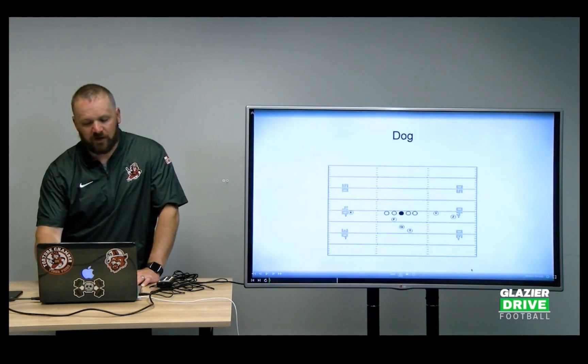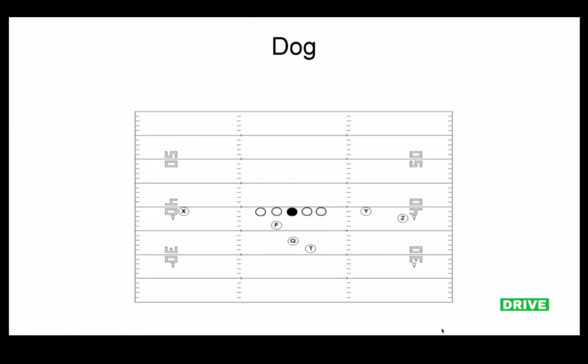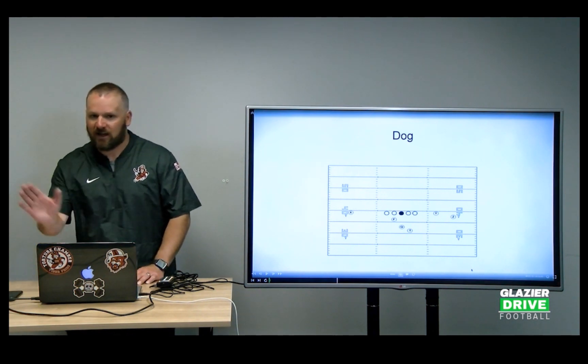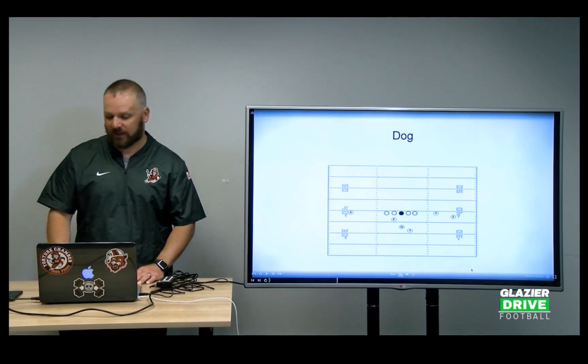Then we have Dog. Dog is a traditional three-receiver set with a fullback. This fullback is a traditional fullback in a two-point stance. He's going to kick out on power, lead on an iso, and wrap on a counter. But we do like for him to be a type of guy that can get out in the flats on a flood or something like that.